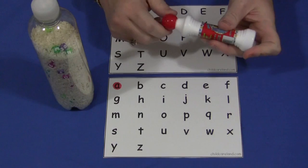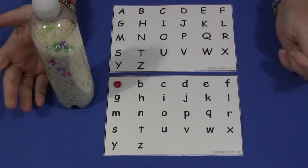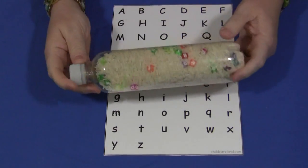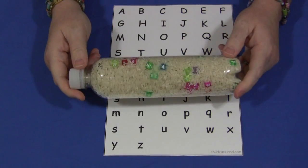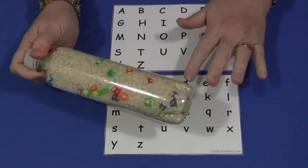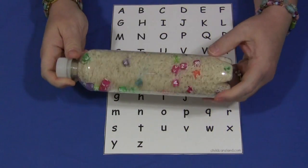This comes with both uppercase and lowercase letter sheets, which can be found on my website childcareland.com under the video section. However, the beads only have uppercase letters on them, but it's still good for children to find the uppercase match if you choose to do that.